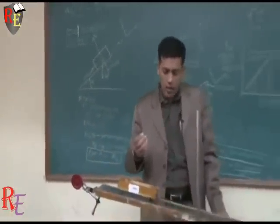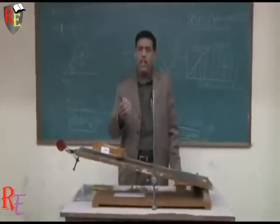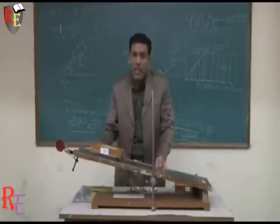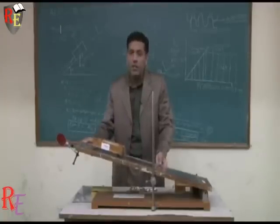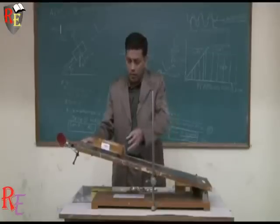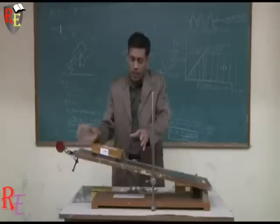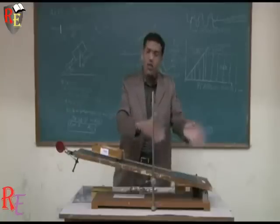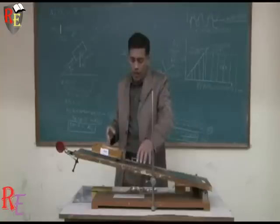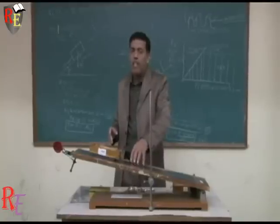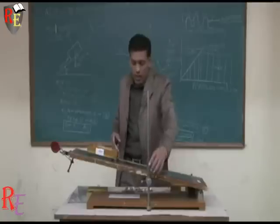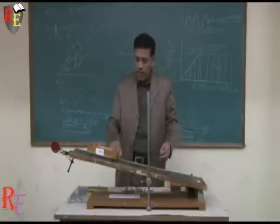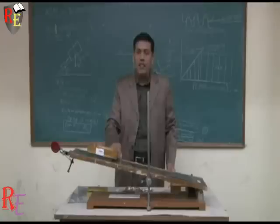There are certain sources of error in this method. If the angle of incline is changed abruptly rather than gradually, the impending state may be overshot. To eliminate this error, the incline should be changed in a gradual manner. Additionally, the tap should be gentle and uniform.